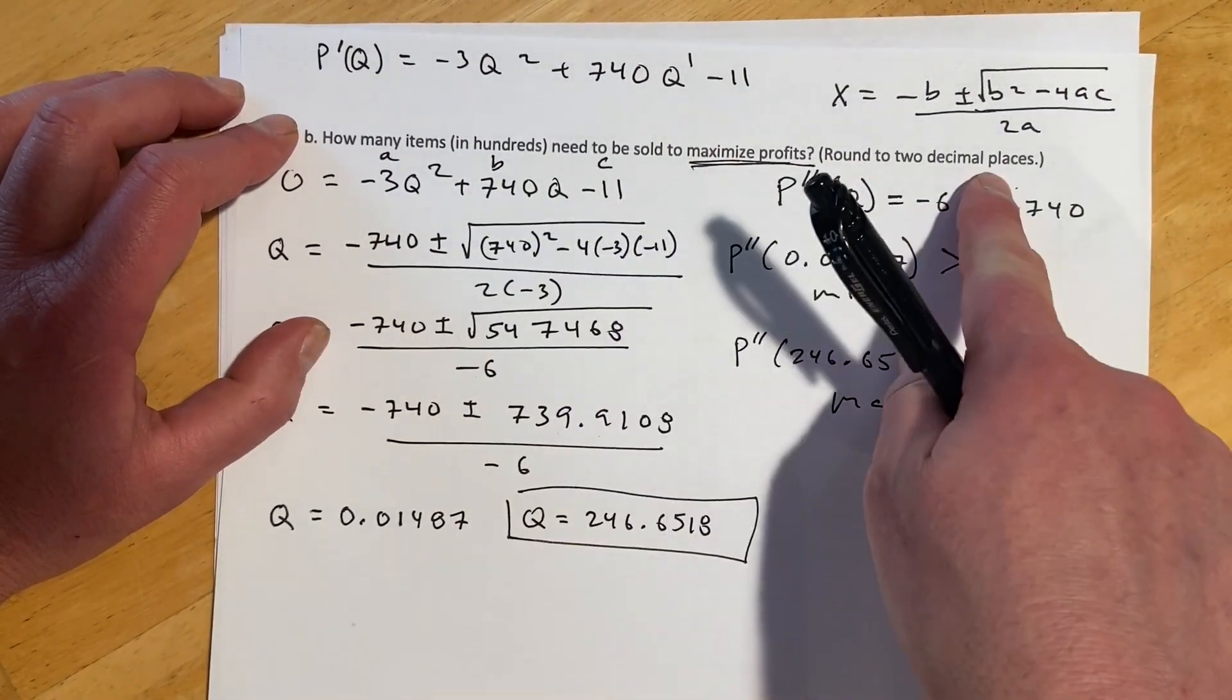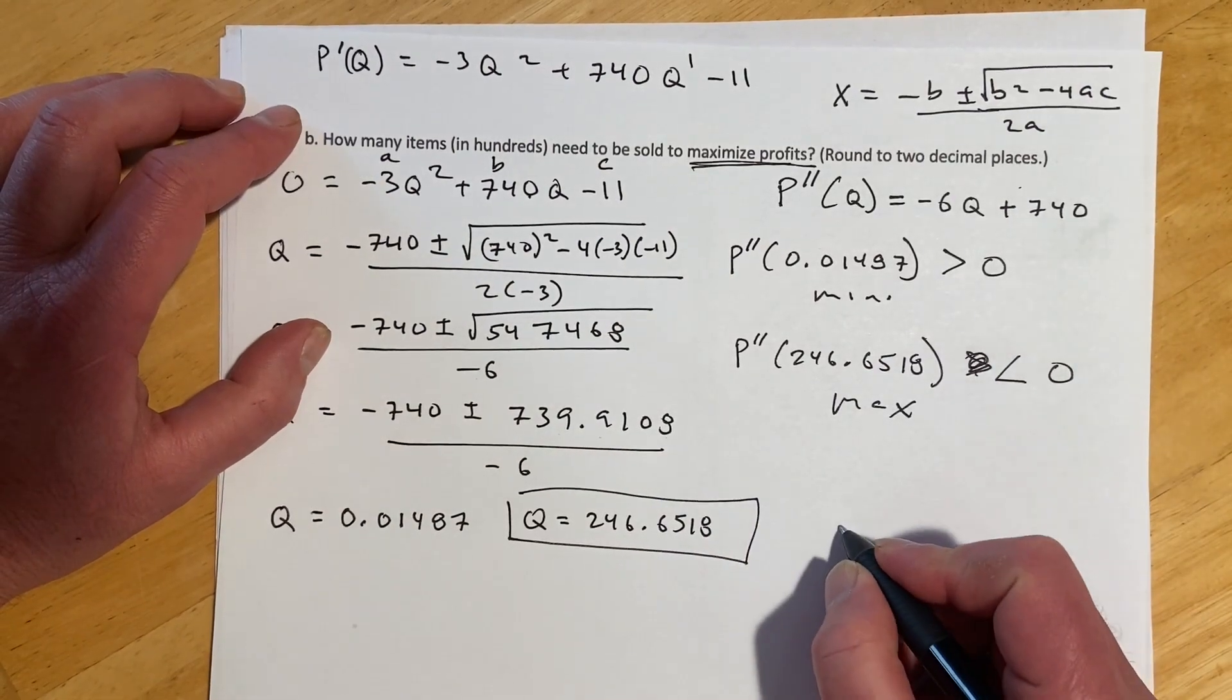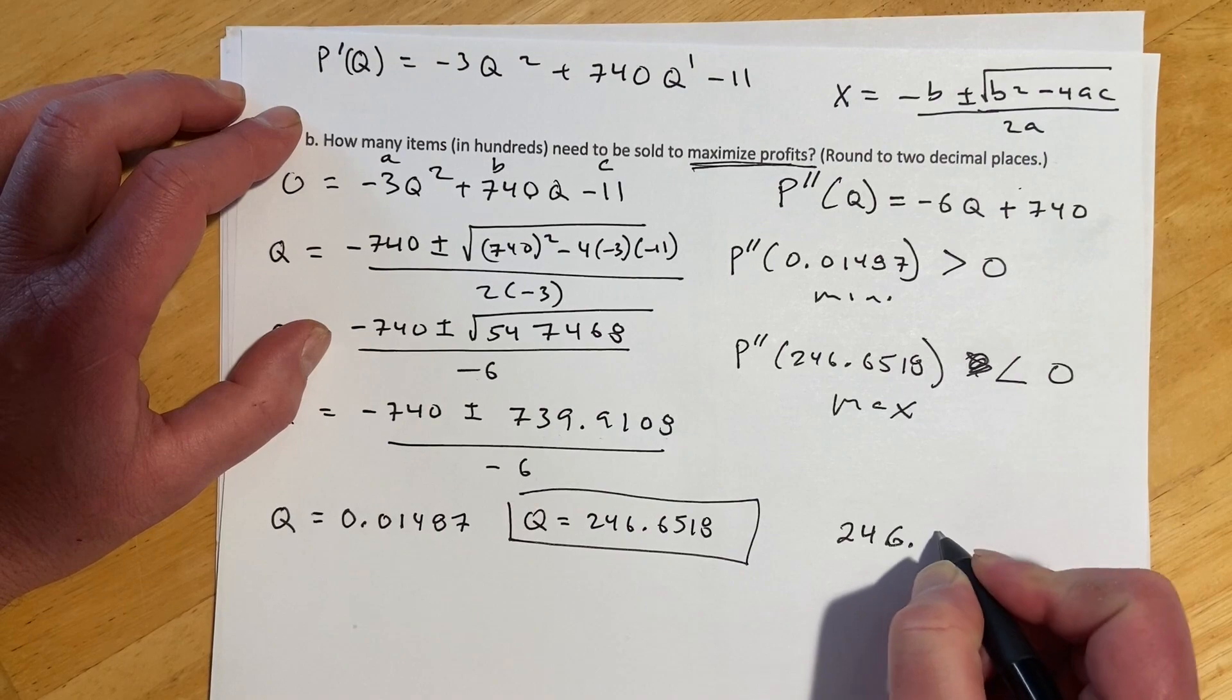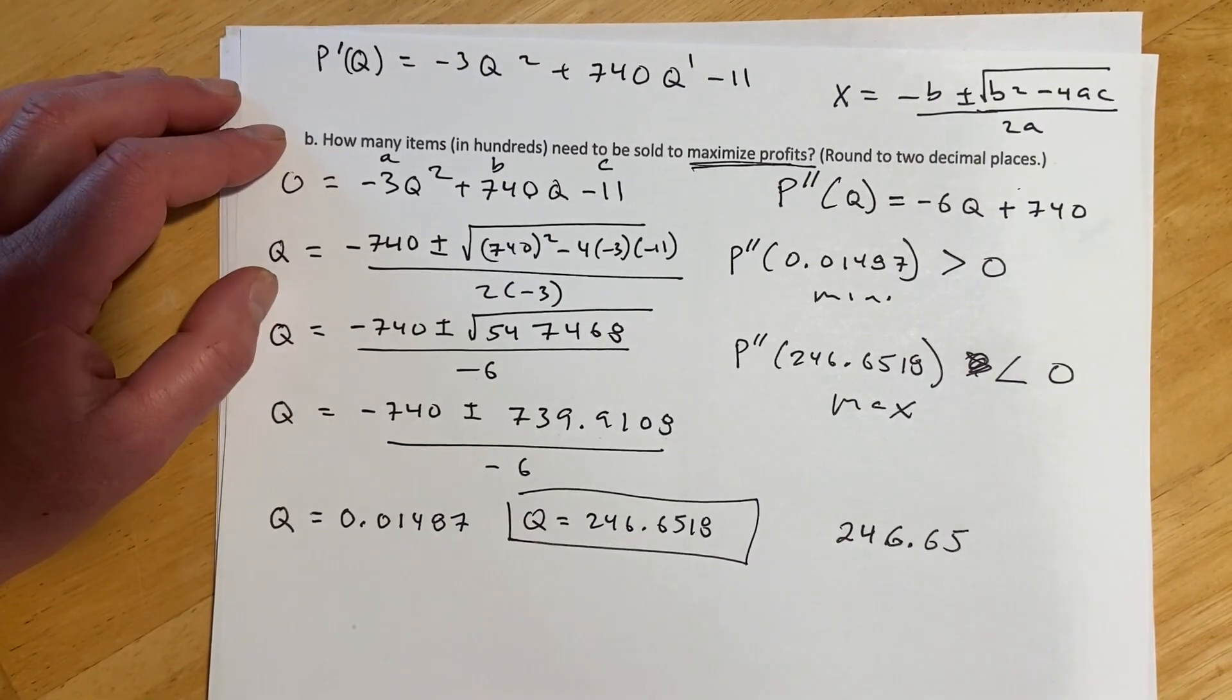So hopefully this one should do it. And so if I do P double prime of that value, that will be 246 times negative 6 is going to be close to negative 1,500 plus that. So that is going to be less than 0, and so that is going to be our maximum. So this is the one. And then it wants it rounded to two decimal places because it's in hundreds. So here we would say 246.65 is what we would enter in the computer.